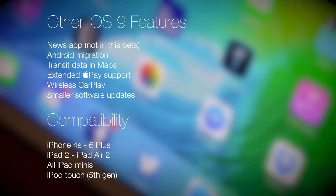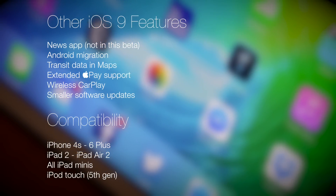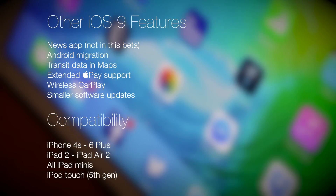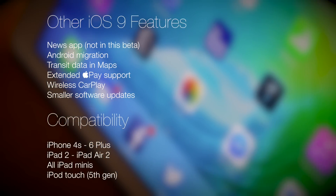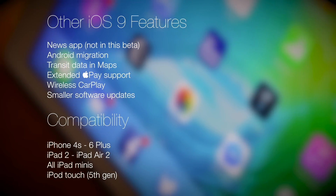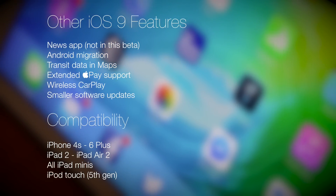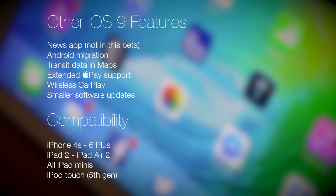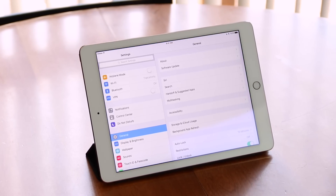Another feature being developed is a redesigned news application, though this is currently not in this beta. Other features include Android migration and transit data in maps. The hardware compatibility for iOS 9 is also very strong. So there you have it, a quick tour of iOS 9 beta.